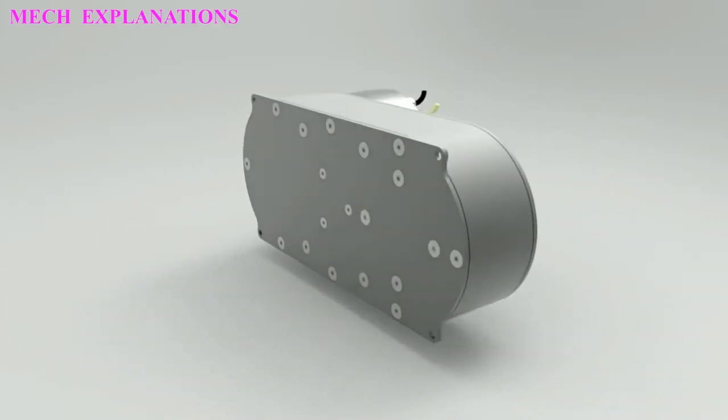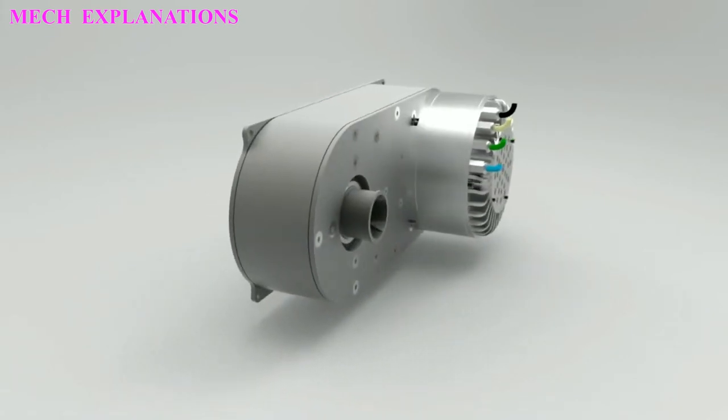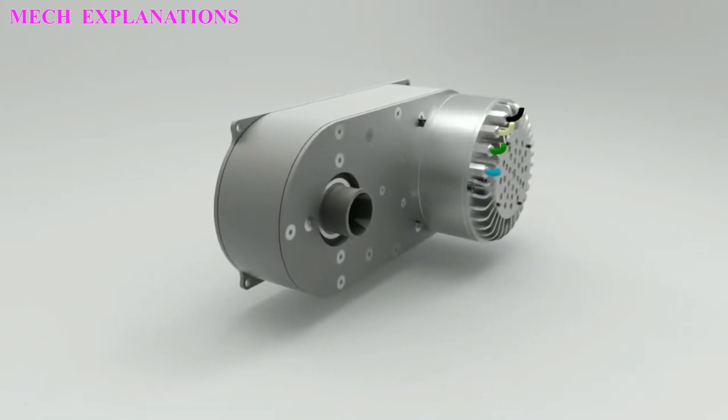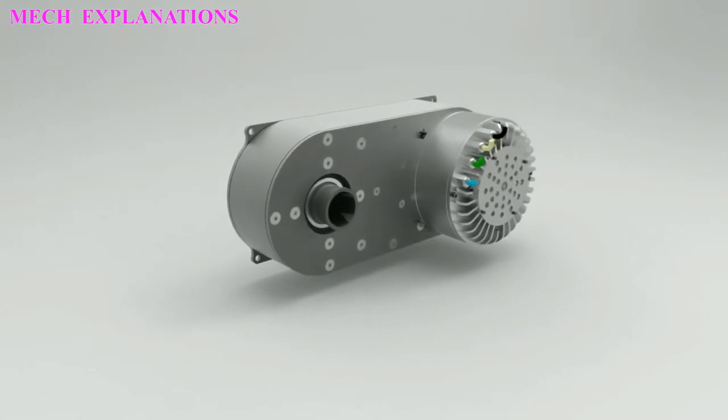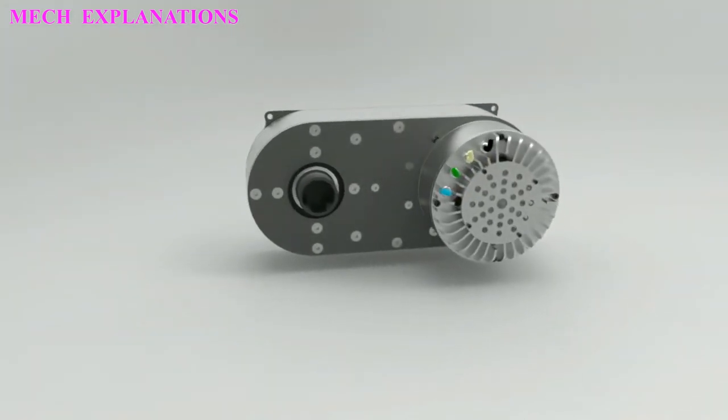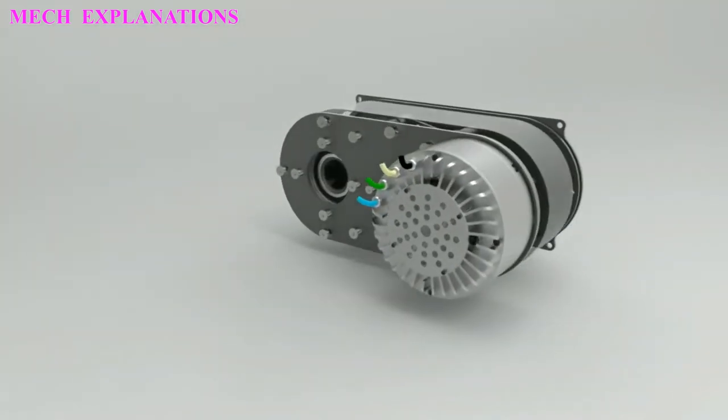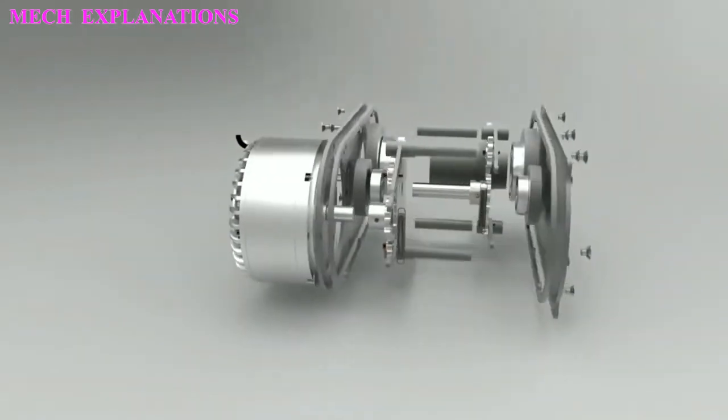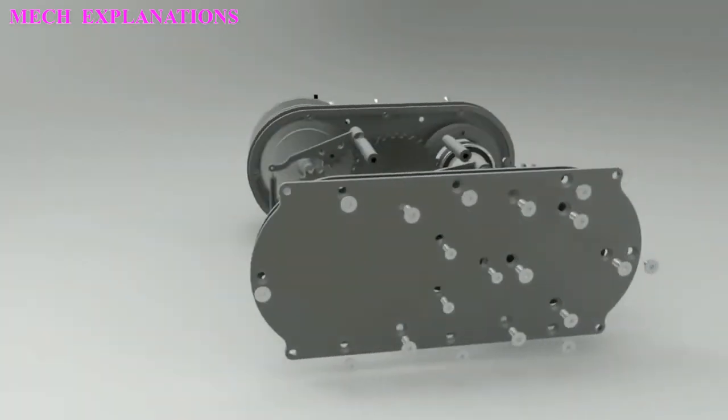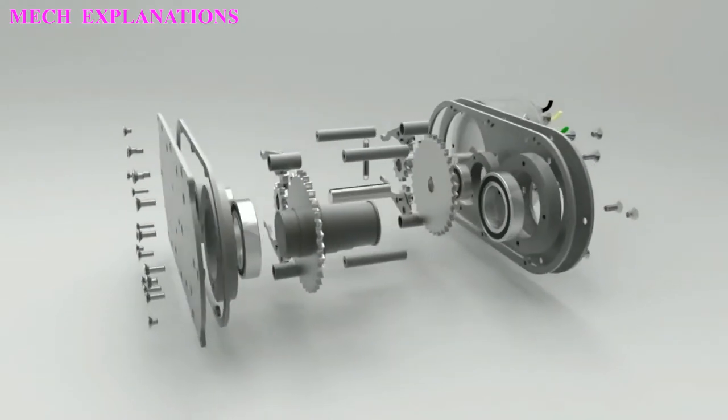Mechanisms generally consist of moving components that can include gears and gear trains, belt and chain drives, cam and followers, linkages, friction devices such as brakes and clutches, and structural components such as a frame.